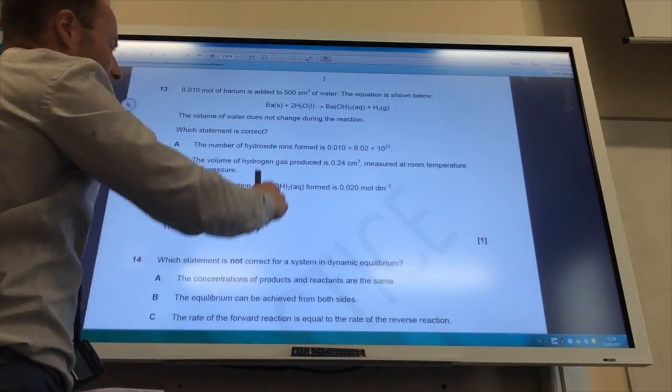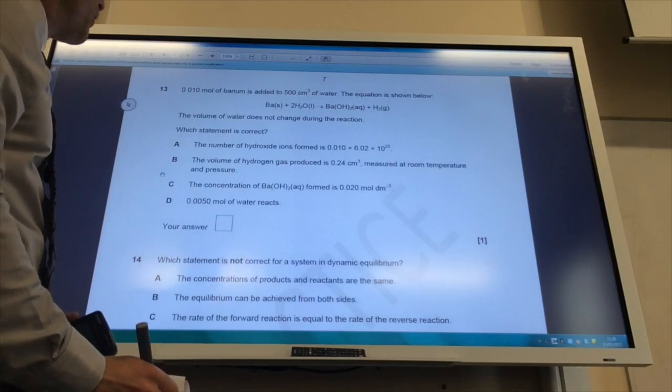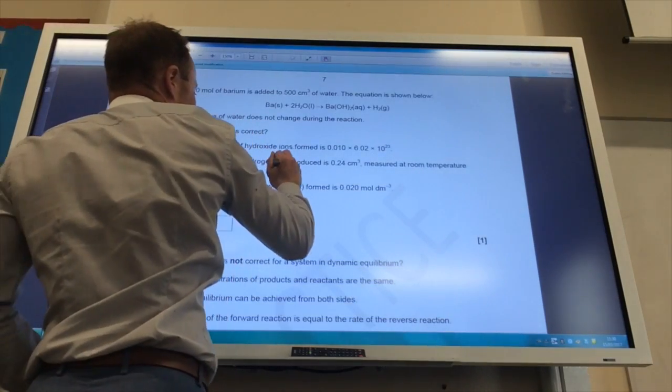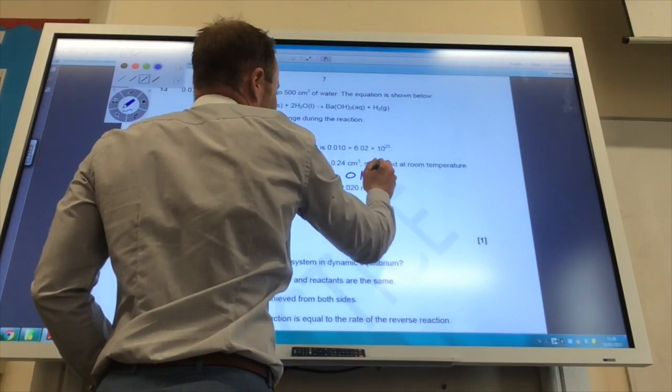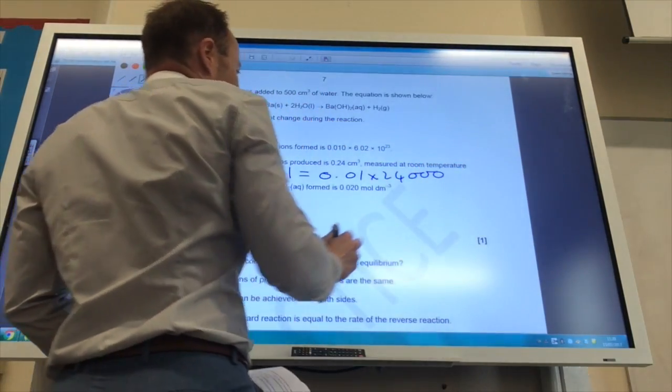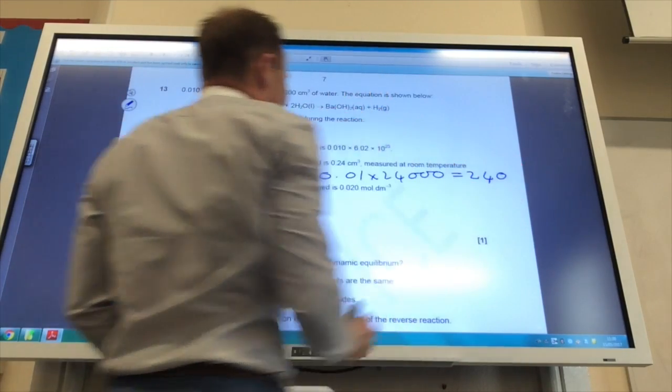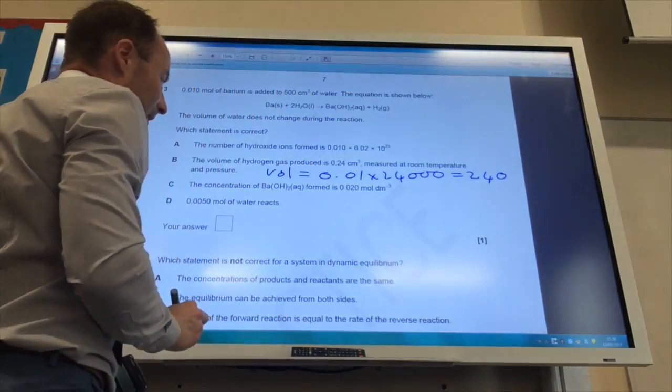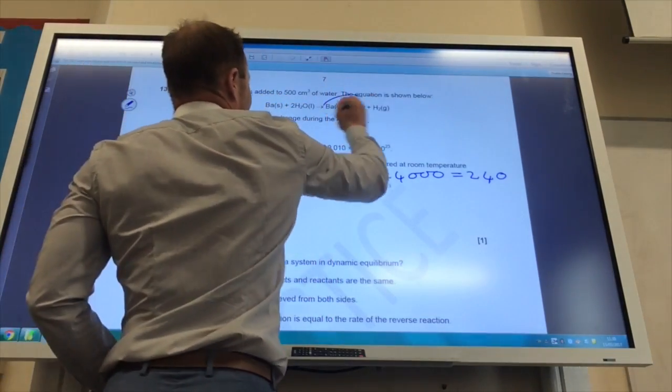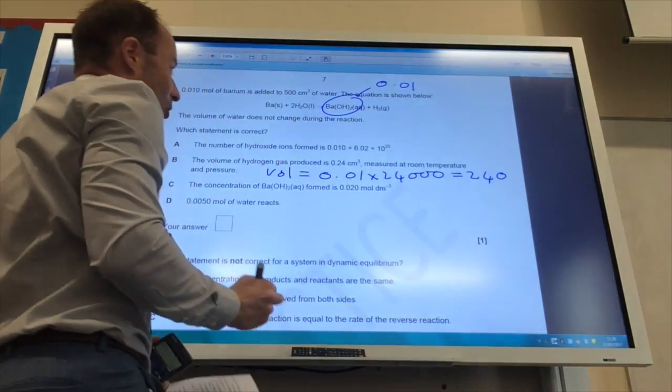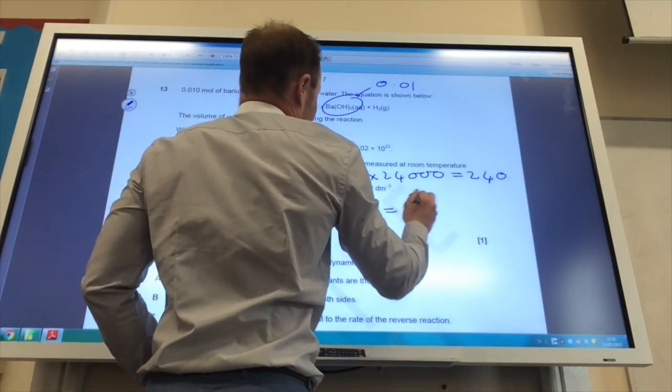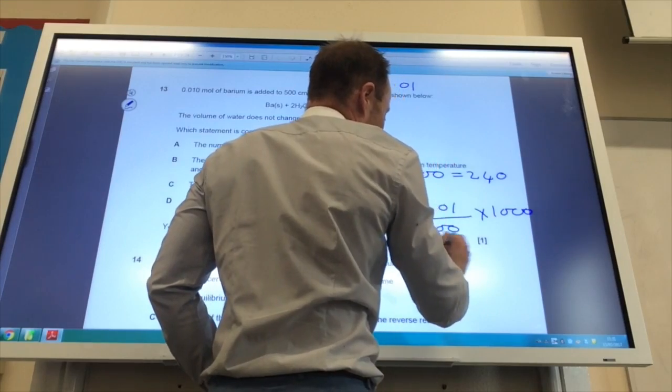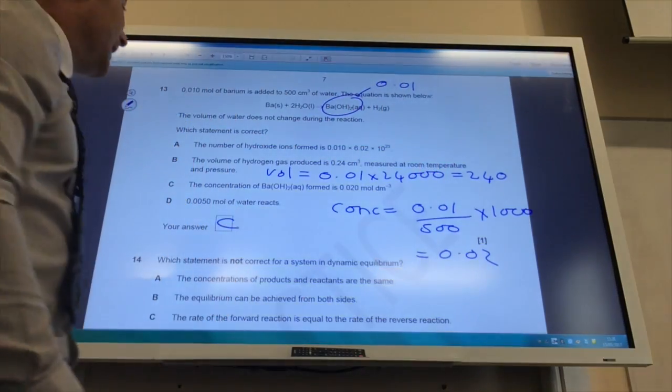The volume of hydrogen gas produced is 0.24 measured at room temperature and pressure. What volume of hydrogen gas would I produce? The volume equals the number of moles, which is 0.01, times 24,000, which equals 240. So that's not correct. The concentration of barium hydroxide formed is 0.02. I'm going to form 0.01 mole of barium hydroxide. Concentration equals moles divided by the volume times 1,000, which equals 0.02. So the answer is C.